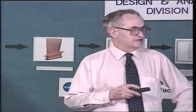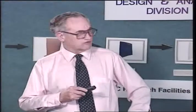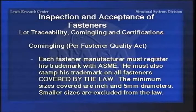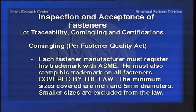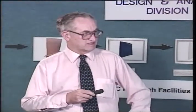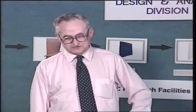The minimum sizes covered are a quarter inch in the inch system and five millimeter diameters in the metric. That's not altogether true either - if the fastener is through hardened, that is heat treated, smaller sizes are covered. But nearly all the small sizes are excluded from the law because they're not heat treated that much. If the fasteners haven't been exempted, they're now restricted by this commingling rule, so at least you have a better idea of who the manufacturer was on your lot of fasteners.